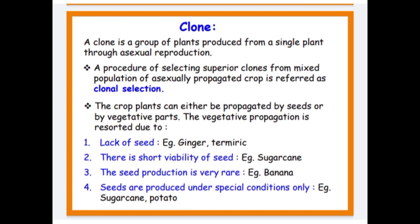A clone is a group of plants produced from a single plant through asexual reproduction. A procedure of selecting a superior clone from a mixed population of asexually propagated crops is referred to as clonal selection.